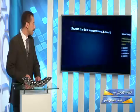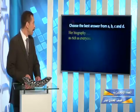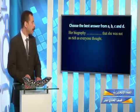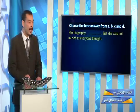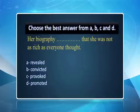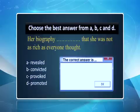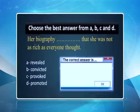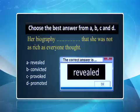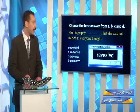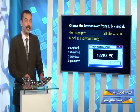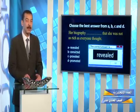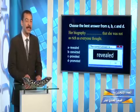Next question: her biography blank that she was not as rich as everyone thought. The choices are revealed, convicted, provoked, or promoted. The answer is revealed — that is, to make known or make public. Her biography revealed something which was not known to everyone — to reveal a secret, for example.